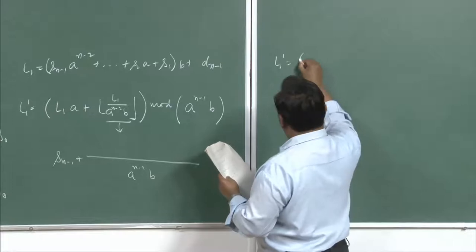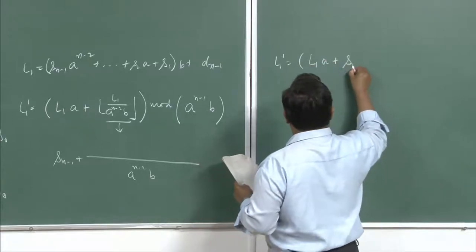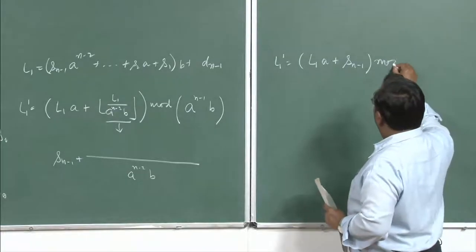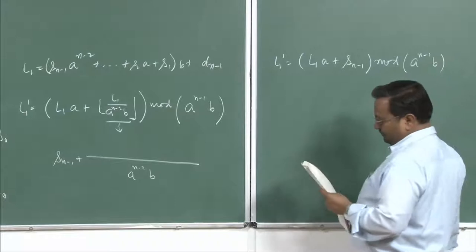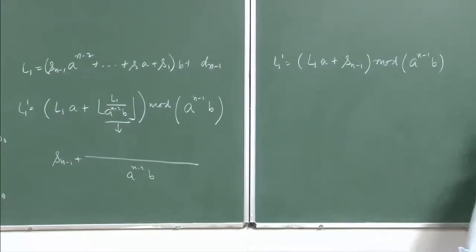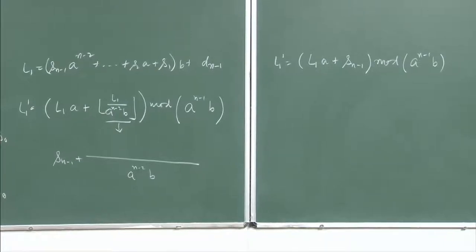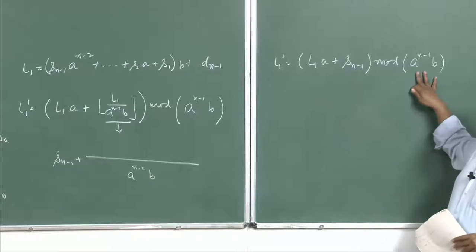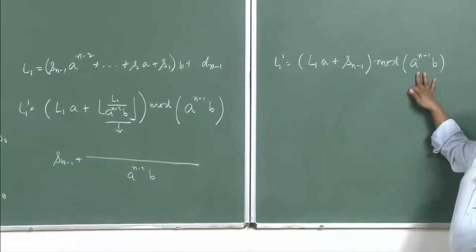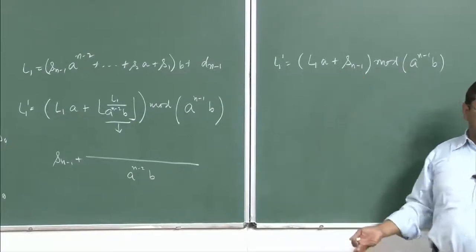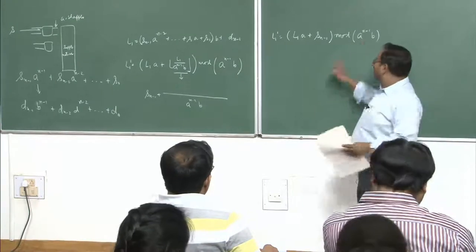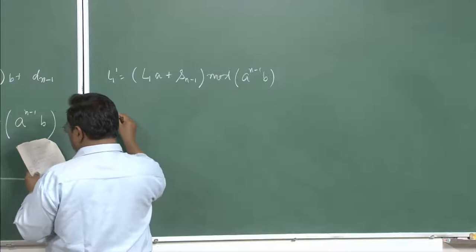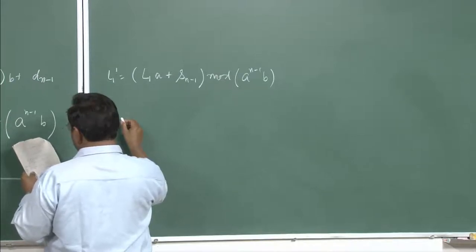So you will end up with L_1 prime given by L_1 into a plus the remaining term — that is the point where we finished last time. So we have to now solve this modulo operation. Let us find out what L_1 times a plus s_1 is. We expand this as an expression and try to understand: if I do a modulo operation, whatever is an integral multiple of the modulus factor will be removed and whatever is left will be the outcome.